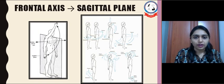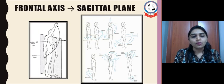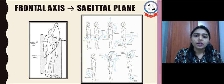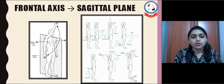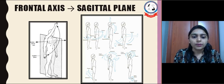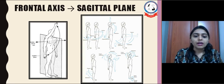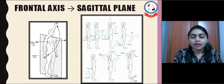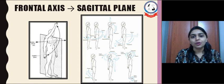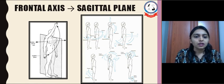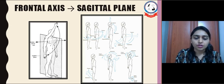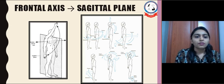Examples for the frontal axis are flexion-extension variety movements in almost all joints — like shoulder, elbow, wrist, hip, knee, and in the ankle, dorsiflexion and plantar flexion — as well as flexion-extension in the cervical and lumbar spine. Except for the thumb, flexion-extension movement occurs around the frontal axis and in the sagittal plane.